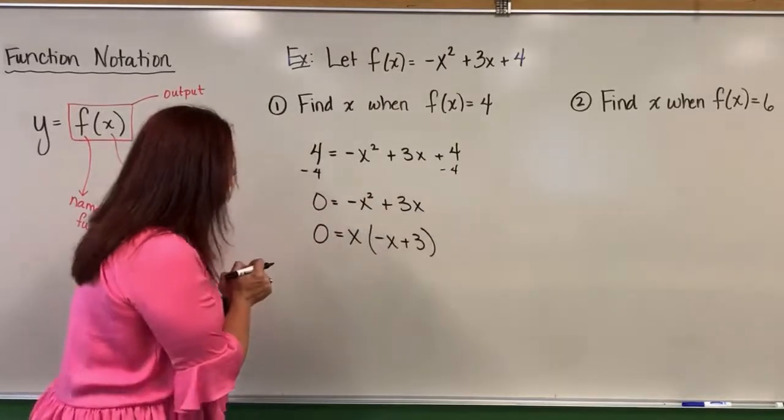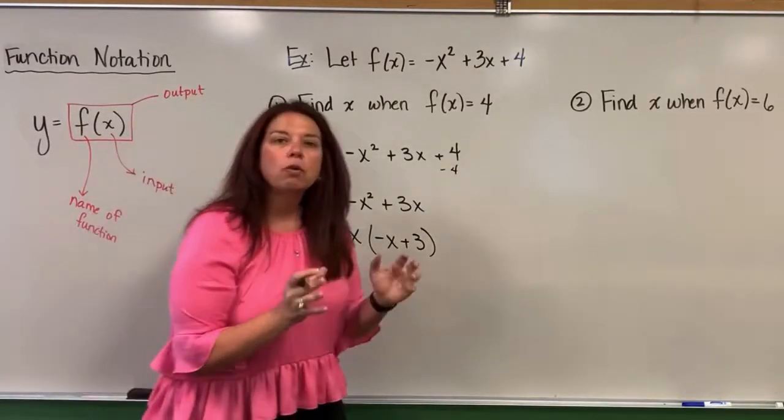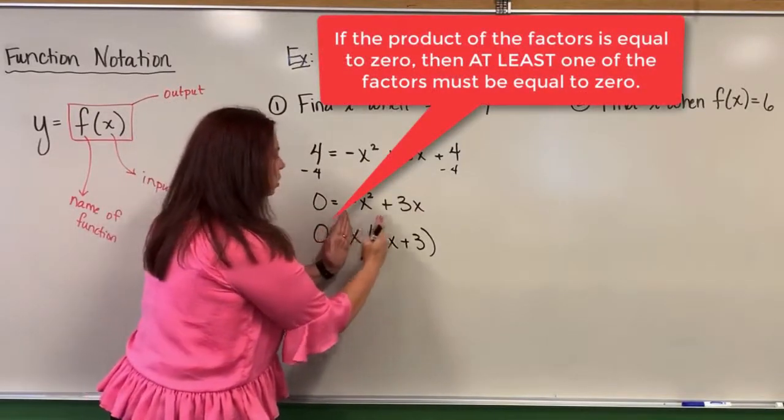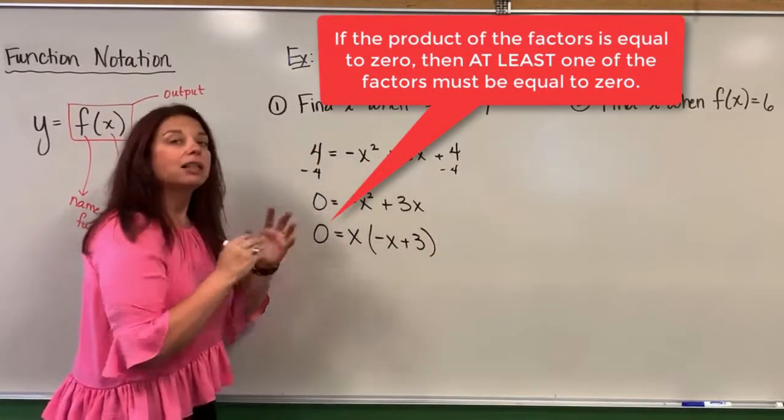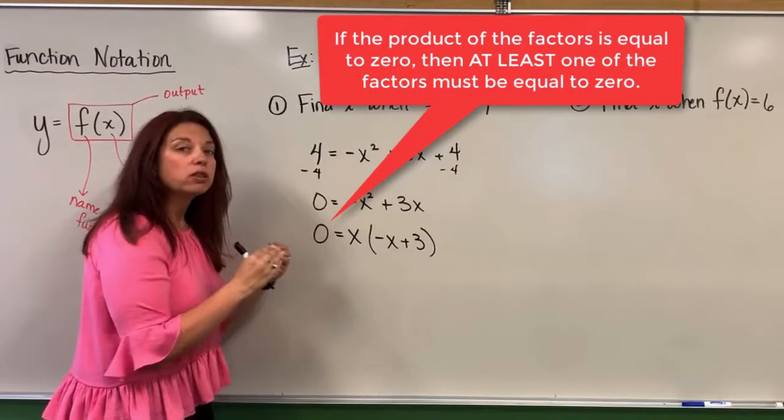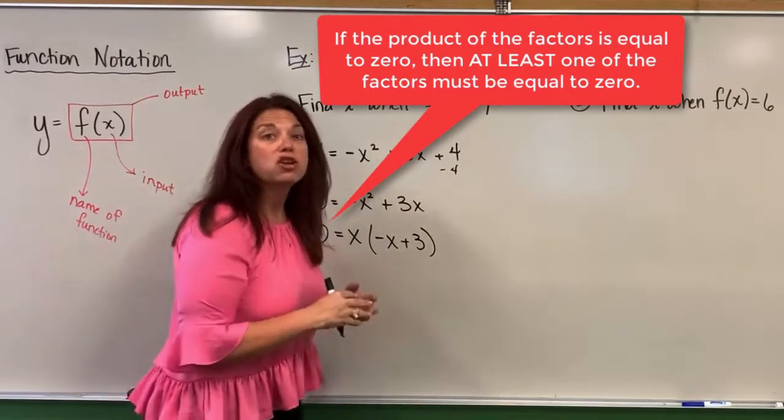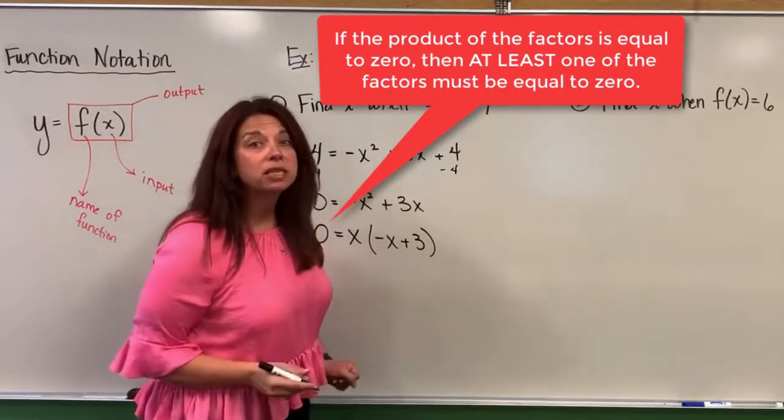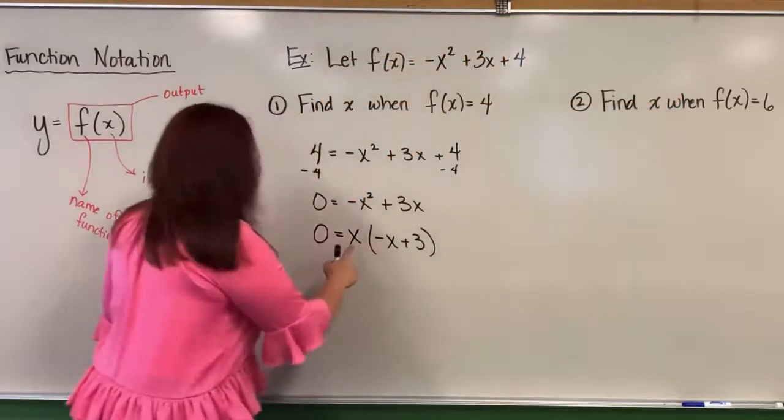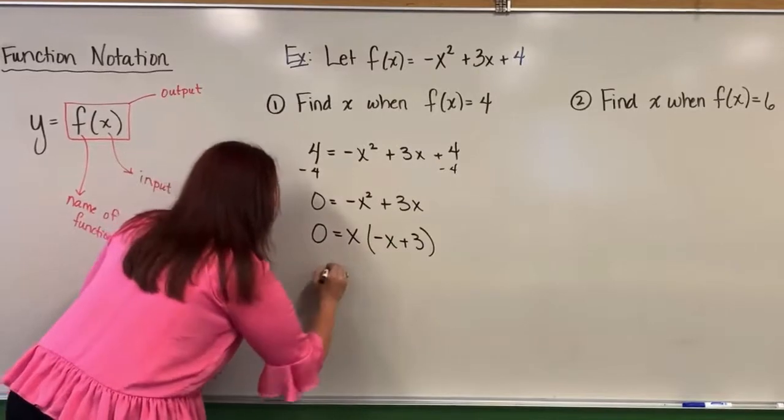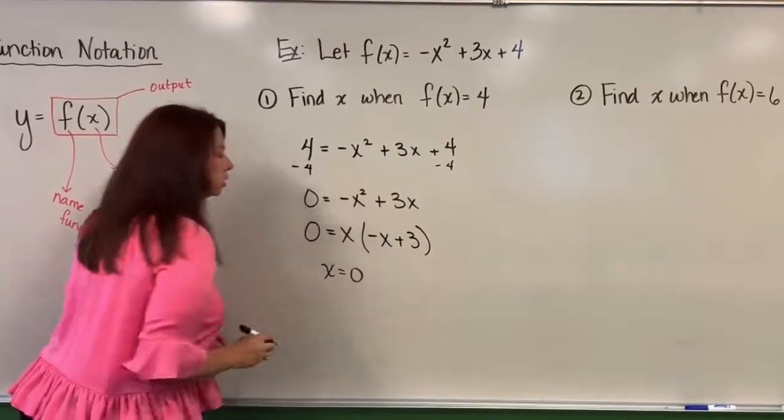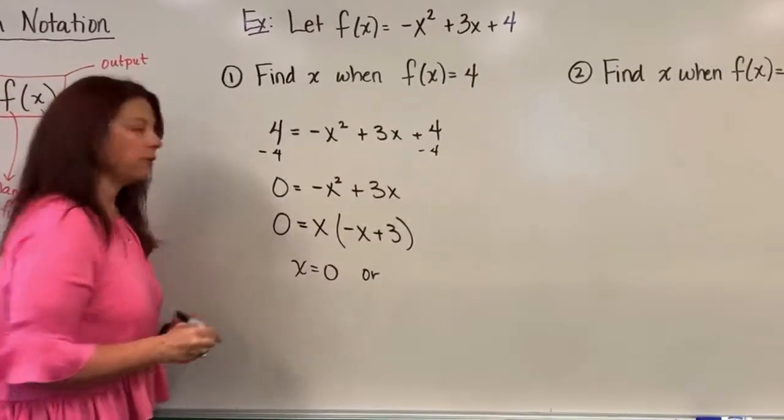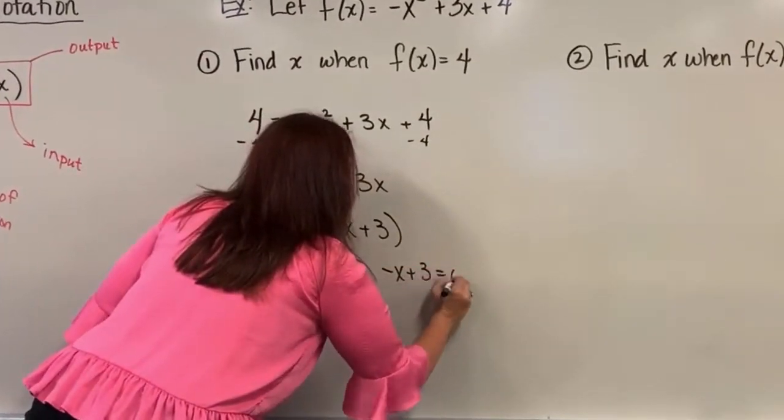So now once I have everything factored, I can use something called the zero product property. And that property tells us because you have two things being multiplied together, let's set each one of those products to zero. Because we know in order to achieve the zero, one of those things, one of those quantities must be a zero. Perhaps both. So we're going to set the x equal to zero as one equation. And then we're going to set this other product, negative x plus 3, also equal to zero.